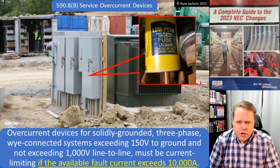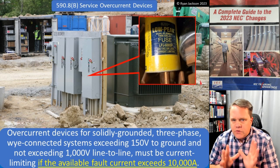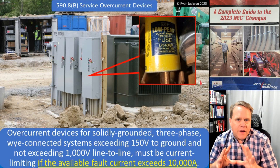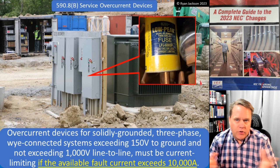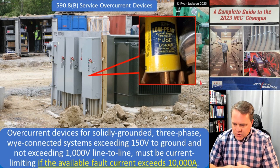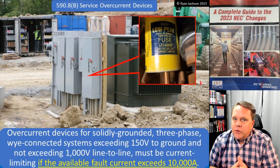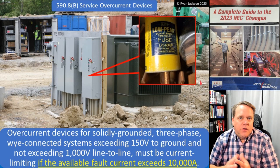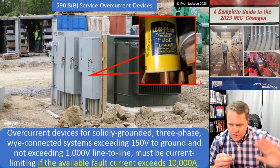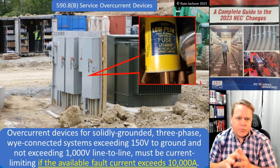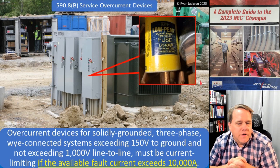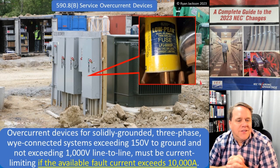We're going to go through this one slowly. Number one: service overcurrent devices. This only applies at the service. So if you have a temporary wiring installation — remember, temporary wiring can be as small as a little 50-amp outlet for building a house, or it could be absolutely massive. I've seen temporary wiring that's thousands of amps for a big high-rise building. So here we're talking about the service overcurrent device — nothing downstream of it, just the service. Overcurrent devices for solidly grounded, three-phase, Y-connected systems exceeding 150 volts to ground, not exceeding 1,000 volts line to line.